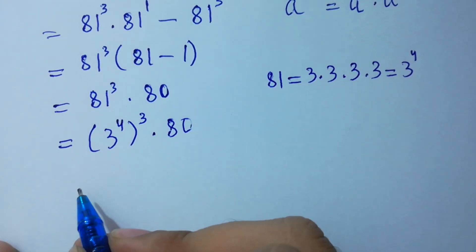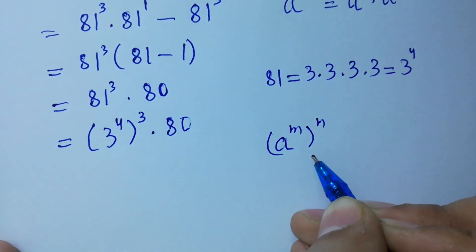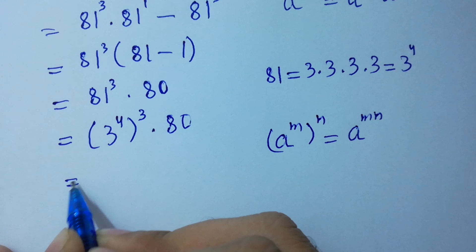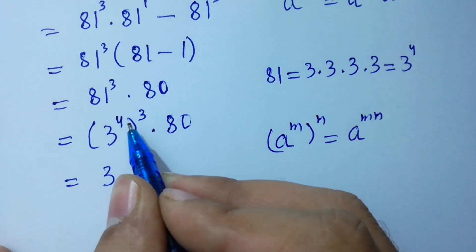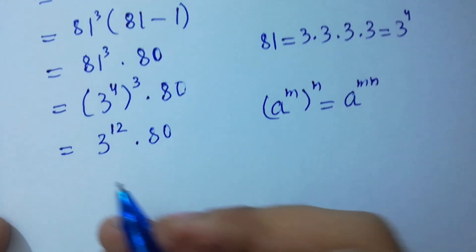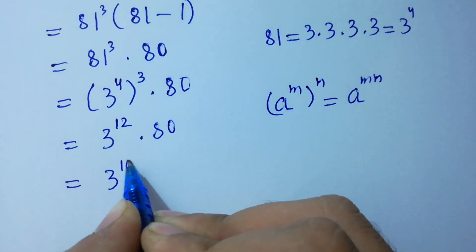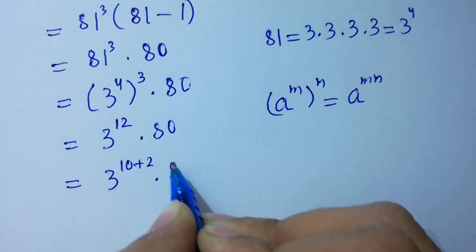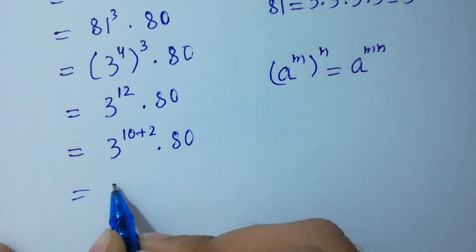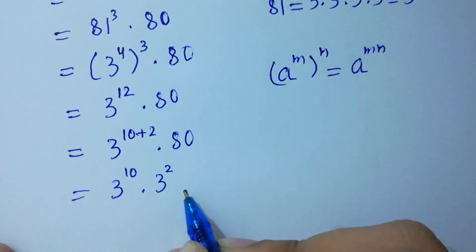Since a^m raised to the power n equals a^(m×n), we have (3⁴)³ = 3¹², so the expression is 3¹² × 80. We can rewrite 3¹² as 3^(10+2), which gives us 3¹⁰ × 3² × 80.